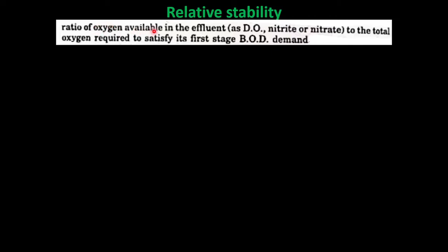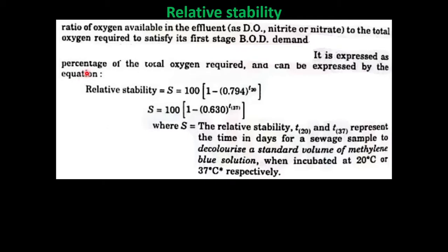Relative stability is the ratio of oxygen available in the effluent to the total oxygen required to satisfy its first-stage BOD, expressed as a percentage. The equations are: S = 100 × (1 − 0.794^T20), or S = 100 × (1 − 0.63^T37), where S is the relative stability.